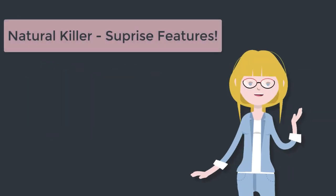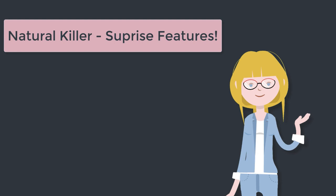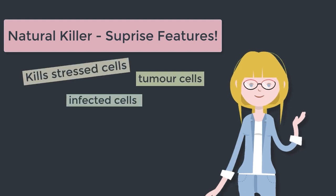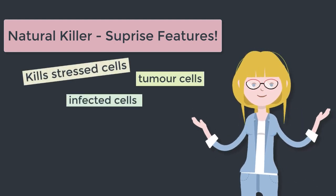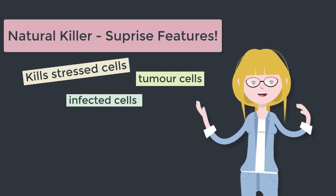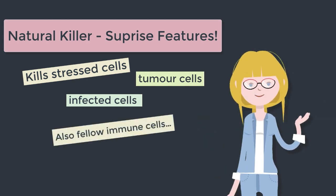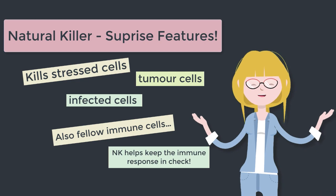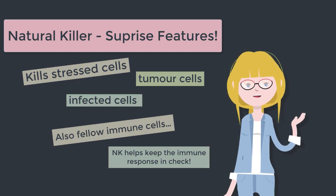Now, pesky little viruses aside, the natural killer cell is still pretty awesome. As well as being able to kill stressed cells — which could be tumours or infected cells — they also kill fellow immune cells. And in this way, they play a regulatory role, keeping the immune response in check.